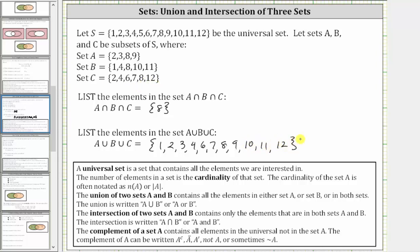So these are the elements that are in set A, or set B, or set C, or in two or three of the sets. And therefore this is the set A union B union C.